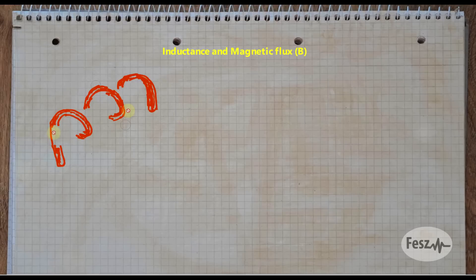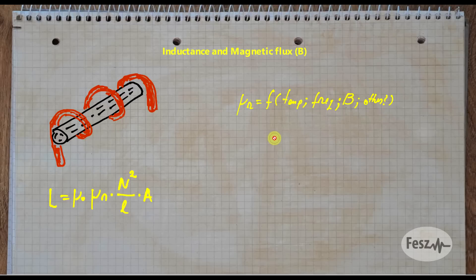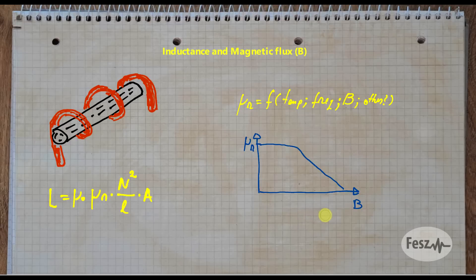With an inductor built around a magnetic core, the inductance is related to the physical construction: the number of turns, the coil's length, and the coil's area. But another key factor is the magnetic permeability of the core. A magnetic core is not really an ideal thing — the permeability is not really a constant, and it can be influenced by multiple factors. The main effect on which the magnetic amplifier relies is the permeability's variation with the magnetic flux density: the more flux you have, the lower the permeability you will end up with.